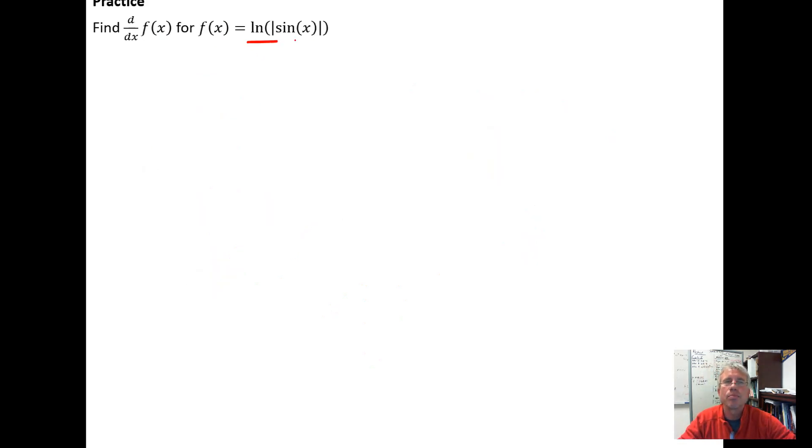So if we're applying it to a specific example then, if we have f(x) equals the natural log of the absolute value of the sine of x, and we could only do this for input values for the sine that don't give us a 0,